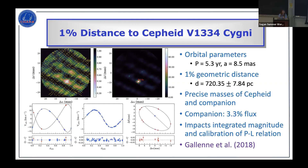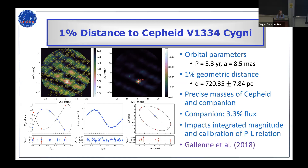In addition to masses, you can also get distances very accurately. This shows mapping the orbit of a companion to the Cepheid star V1334 Cyg. The companion contributes only 3% of the light, but you get a nice visual orbit from interferometry. Combining that with radial velocity measurements gives both masses and a 1% distance. These nearby Cepheids can then calibrate the period-luminosity relation, and accounting for even that 3% flux contribution changes that calibration.